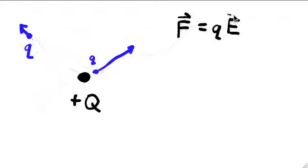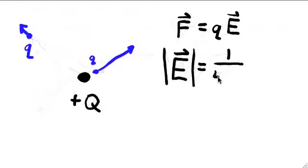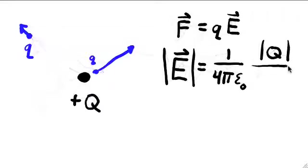We know that the magnitude of the force is always proportional to the test charge little q. The electric field is defined as the part of the force which does not depend on little q. The magnitude of the electric field is given by Coulomb's law without one of the charge factors, and the direction of the electric field is either away from or toward the charge that sources it, depending on the sign of that charge.